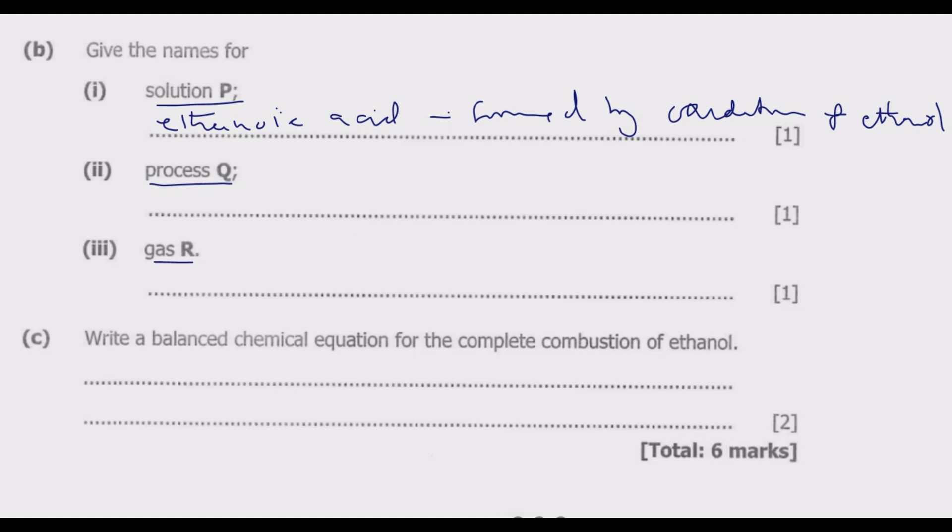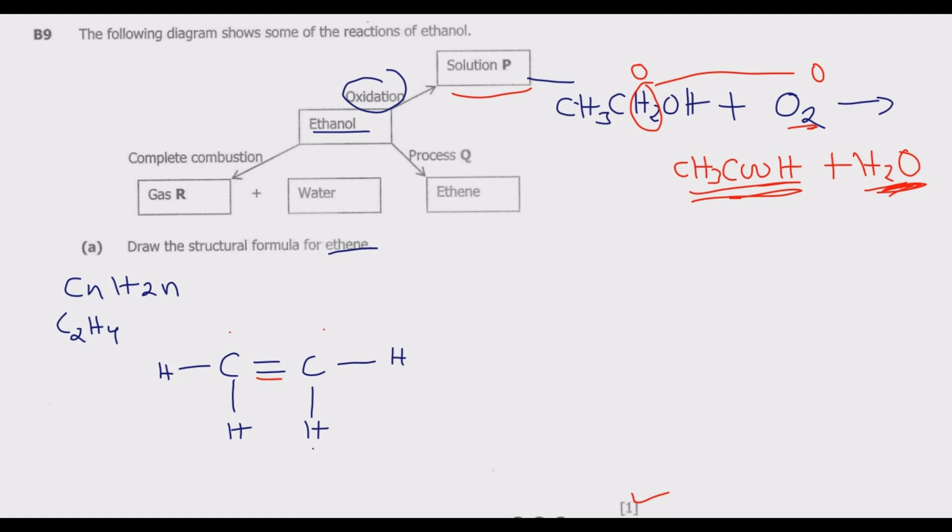Now for process Q. Let's look at process Q. What is happening is we're getting ethene from ethanol. What do you call this process? This process is known as dehydration of alcohol.